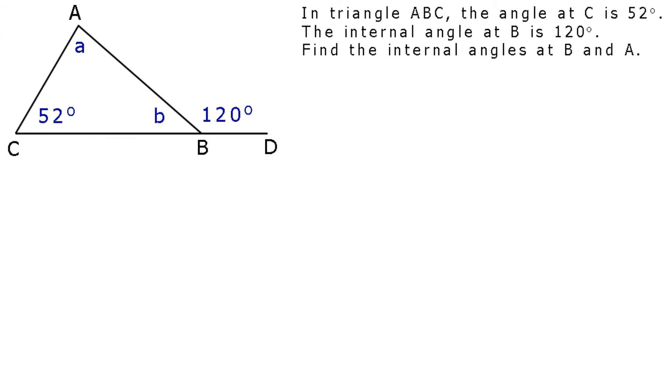Let's confirm that we know what we're doing here with one more problem. In triangle ABC, the angle at C is 52 degrees, while the external angle at B is 120 degrees. Find the internal angles at B and A. Well, first, let the internal angle at B be B degrees, and the internal angle at A be A degrees.